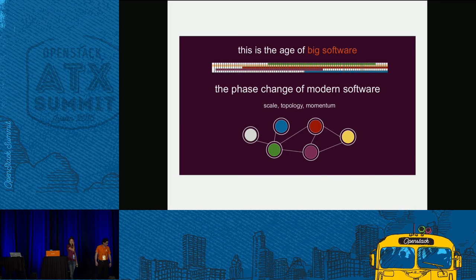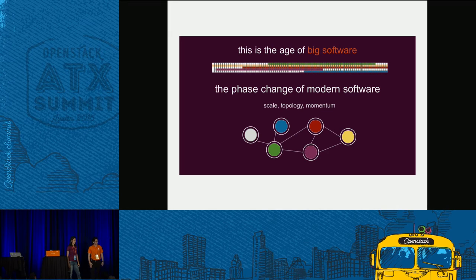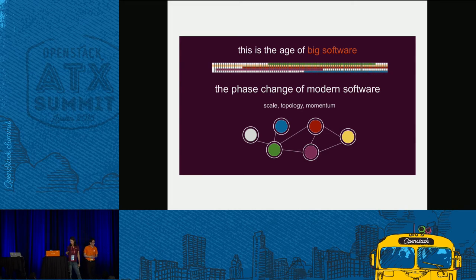What we're talking about here is the age of big software — similar to big data. We've taken software that used to be monolithic or run on a specific device and started to break it out. It's gotten so big you can't do it on one machine anymore — there isn't one single box that's going to run an entire VNF solution. When we start to scale like that, we see a phase change. It's about scalability, topology changes, and managing these things. If we have more and more servers, we need more and more intelligent software. That's the phase change into big software.